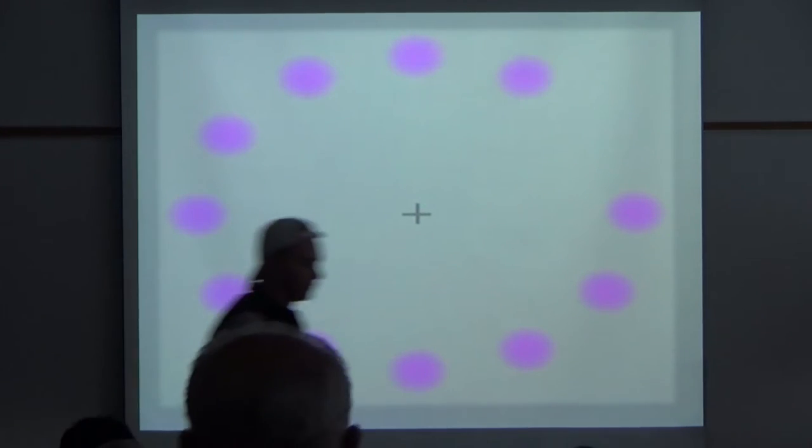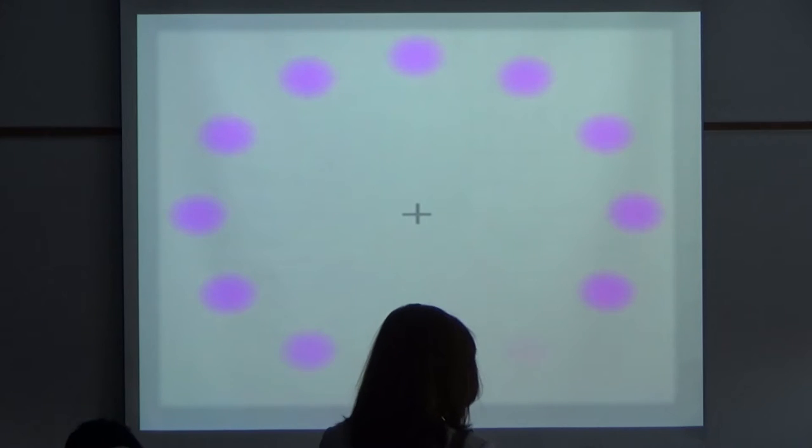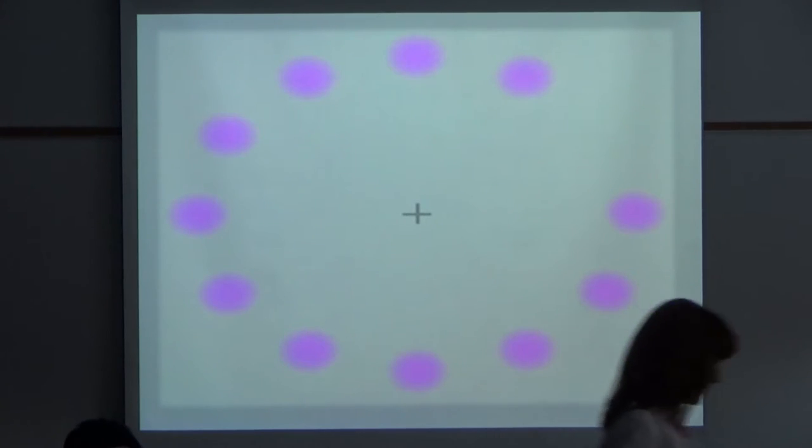Just to show you how our subjective experience can differ from the underlying physical reality, what I want you to do is look at the cross. You'll notice there's a green dot moving around in a circle. This green dot you see does not actually exist. It is an illusion. It's not there. The motion you see is not real motion. These are static images that your brain fuses together into the experience of motion. This is the basis for cartoons, movies, and television.